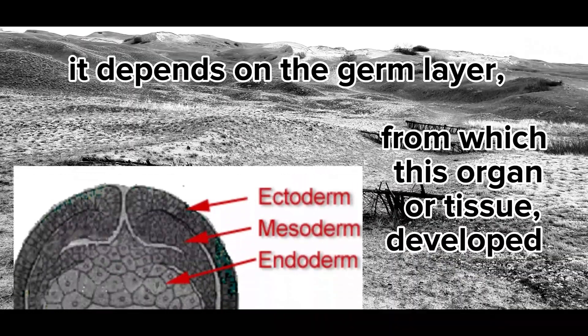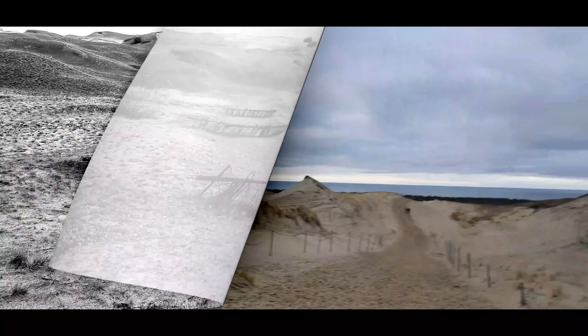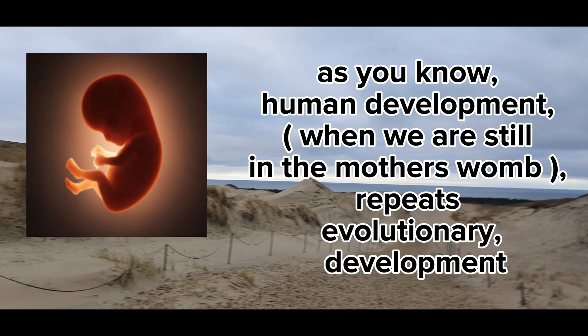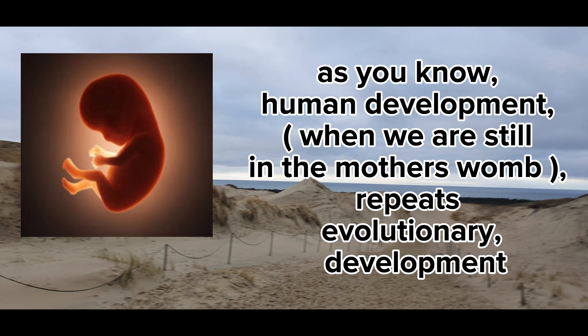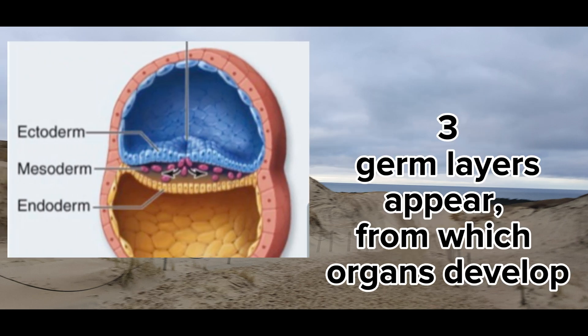It depends on the germ layer from which this organ or tissue developed. Human development, when we are still in the mother's womb, repeats evolutionary development. Three germ layers appear from which organs develop: endoderm, mesoderm, and ectoderm.